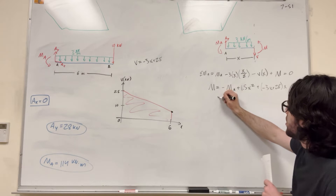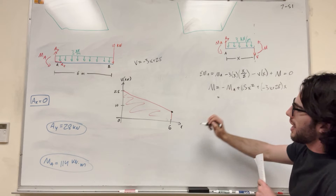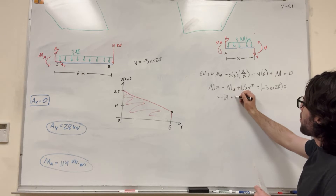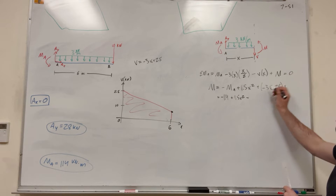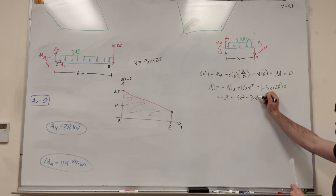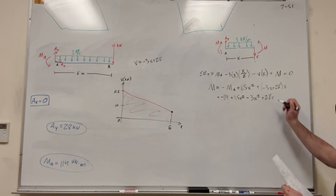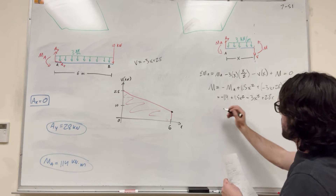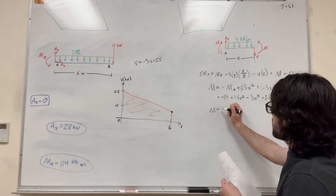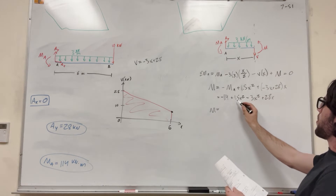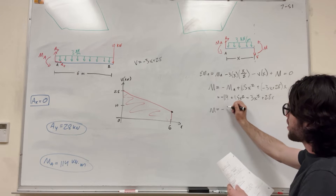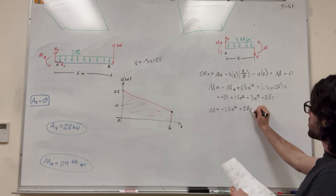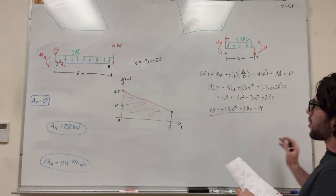Now we simplify. We know moment A is 114, so it becomes minus 114 plus 1.5x squared, then distributing x: negative 3x squared plus 28x. Combining 1.5x squared minus 3x squared gives negative 1.5x squared, so our final equation is M equals negative 1.5x squared plus 28x minus 114.